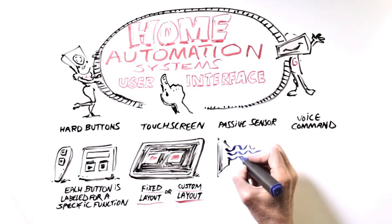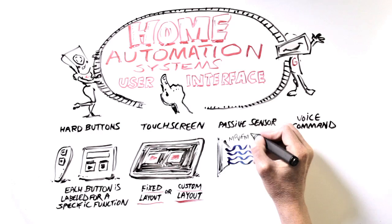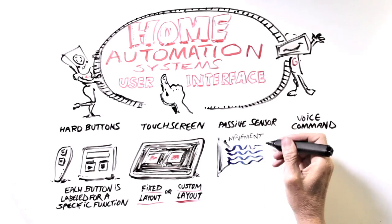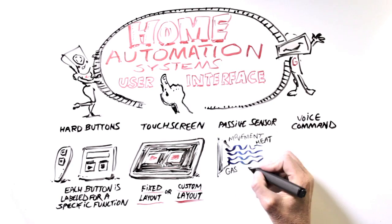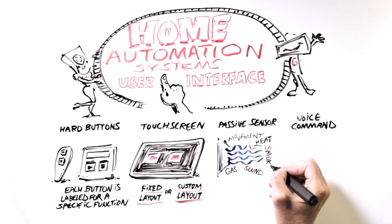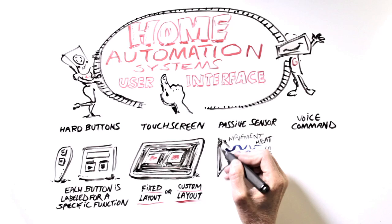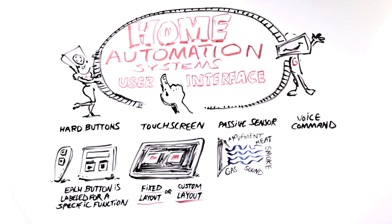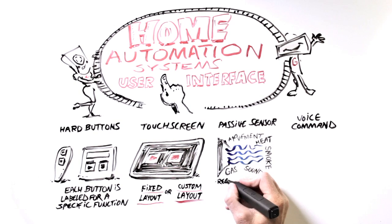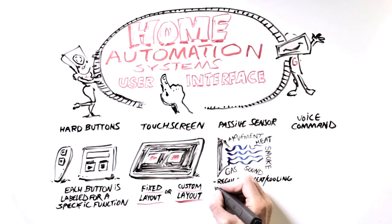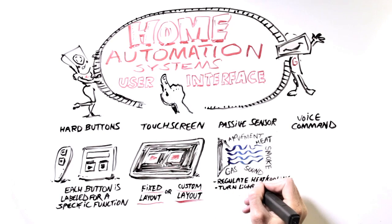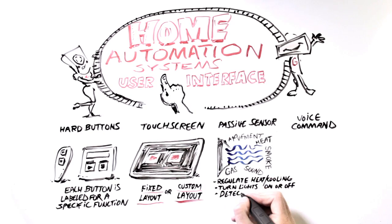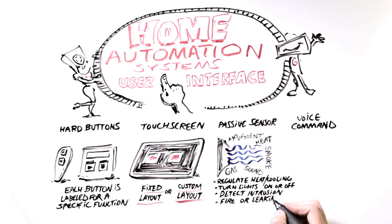The third type of user interface is a passive sensor interface. These are devices placed around the home that detect movement, heat, smoke, or sound, and automatically communicate to the home automation system. Typical applications include automatically regulating heat or cooling, turning lights on or off, detecting intrusion, or identifying early indicators of a fire or leaking noxious gases.